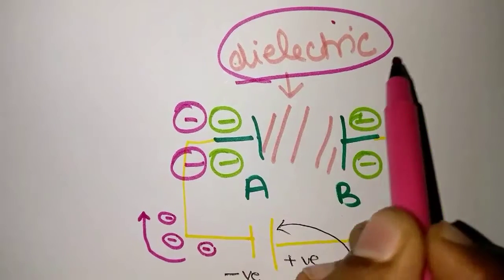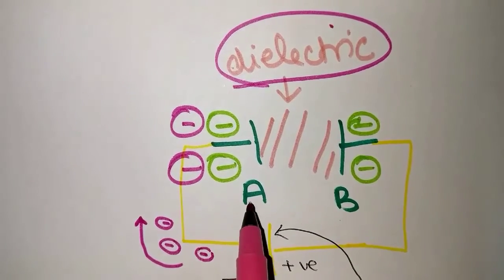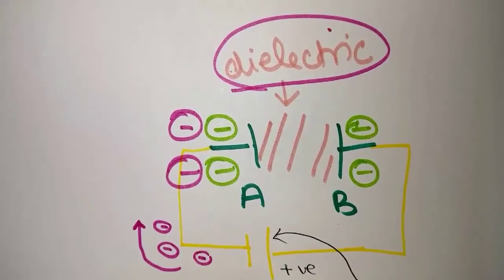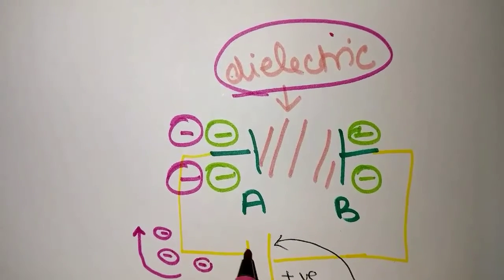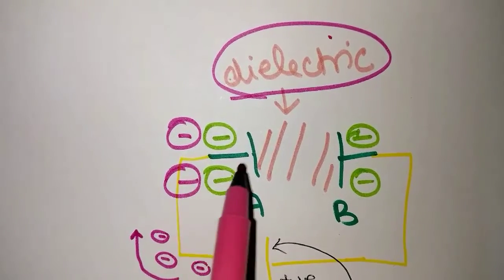Since there is a dielectric material present in between plate A and plate B, the electrons from the negative terminal of the battery tend to accumulate on plate A.